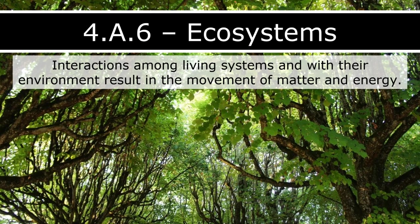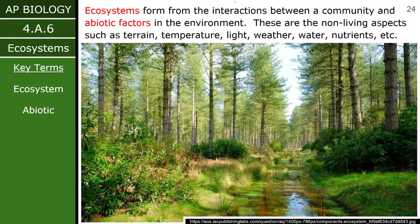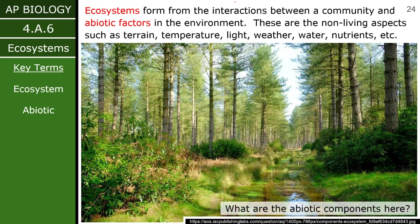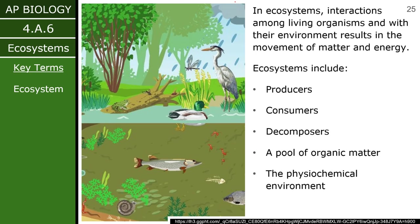Ecosystems are basically the same thing as communities, except we add in the abiotic factor — we add in carbon, oxygen, and basically everything else. These include temperature, light, and any abiotic factor you can think of. Within ecosystems, it's important not to lose track of interspecific interactions. We still have the community there; we're just now also incorporating all of the matter — all of the carbon, nitrogen, et cetera — and the environmental conditions.